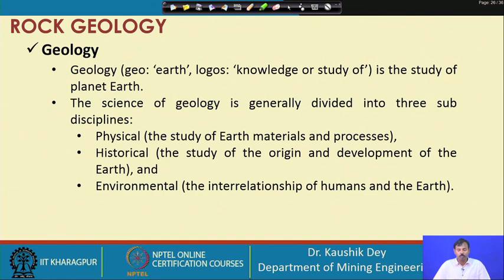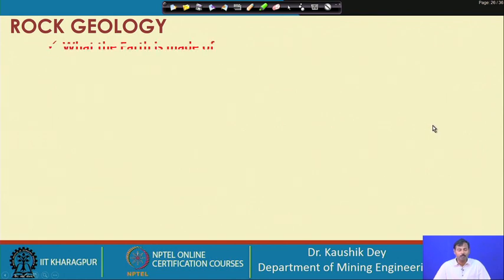Geology — 'geo' means earth, 'logos' means knowledge or study. The science of geology is generally divided into three sub-disciplines: physical geology, historical geology, and environmental geology. Physical geology studies earth materials and processes. Historical geology studies the origin and development of the earth — stratigraphy is part of historical geology. Environmental geology covers the interrelationship of humans and the earth. The physical part — the study of earth materials and processes — is very important when considering rock as a medium of excavation.